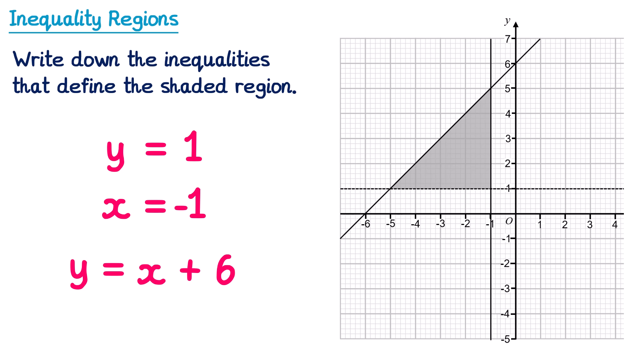For y = 1, the shaded region is above the line and the line is dotted, so the inequality is y > 1. For x = −1, the region is to the left and it's a solid line, so x ≤ −1. For the diagonal line y = x + 6, the region is below it and it's solid, so y ≤ x + 6. For a question like this: find all the line equations, then replace the equal sign with the correct inequality symbol.